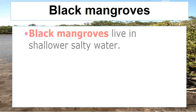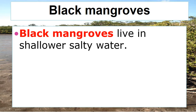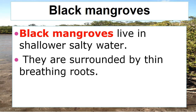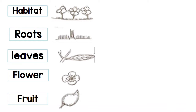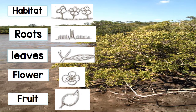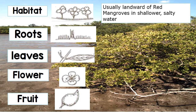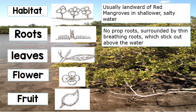Next we will have the black mangroves. The black mangroves live in shallower salty water. They are surrounded by thin breathing roots. The habitat is landward of the red mangroves in shallower salty water. There are no prop roots; they are surrounded by thin breathing roots which stick out above the water.